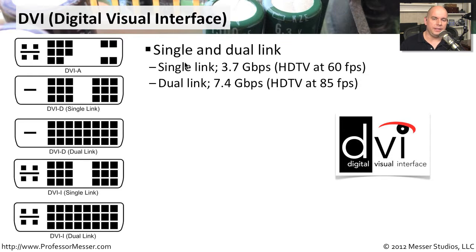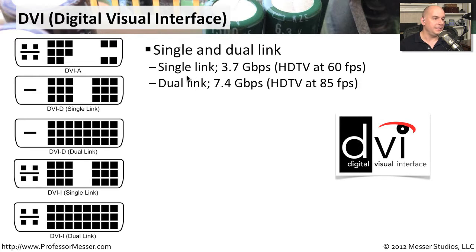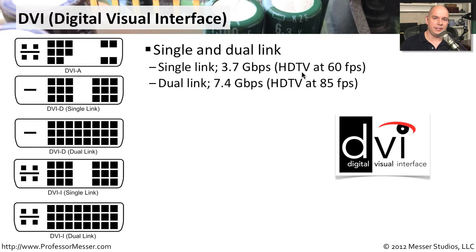There are two kinds of DVI: single link and dual link. This does not refer to the number of cables you're using — it refers to the amount of signal passing through a single cable. A single link connection sends 3.7 gigabits per second of traffic, which is enough to send HDTV signals at 60 frames per second.